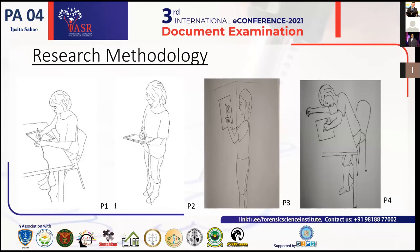Next is the research methodology. The sample size is small as a research part — I have taken only 40 subjects, who were selected and asked to take various body positions as per the requirement of the study. They were all given A4 size paper and the same pen.